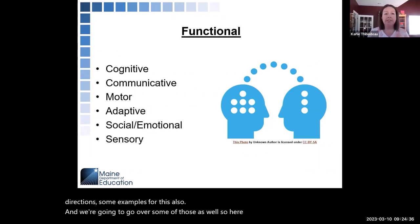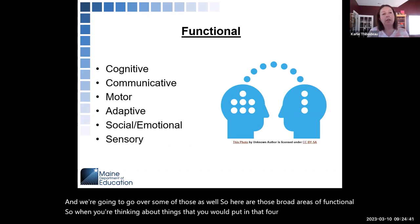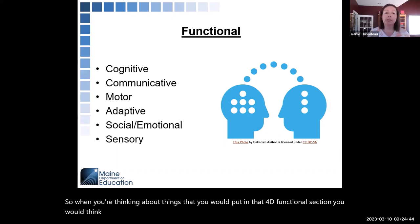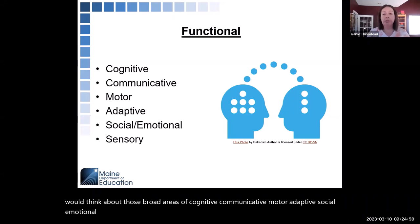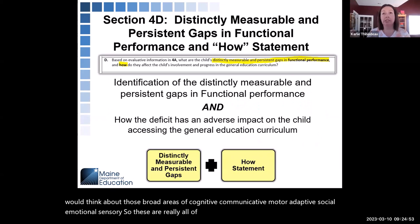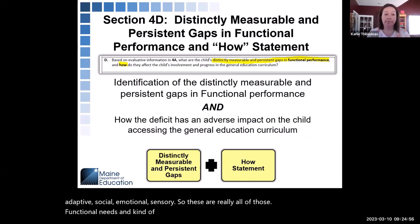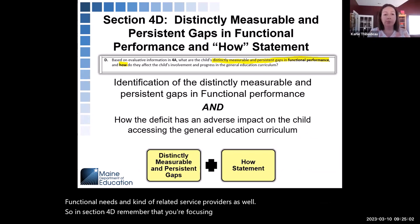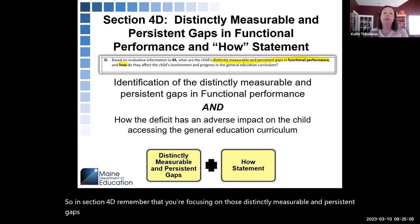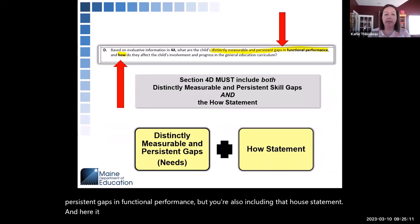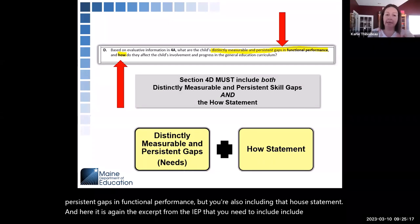When thinking about what to put in Section 4D, consider the broad areas of functional performance: cognitive, communicative, motor, adaptive, social, emotional, and sensory. These cover functional needs and relate to related service providers as well. In Section 4D, remember you're focusing on distinctly measurable and persistent gaps in functional performance, and also including that how statement. The IEP excerpt shows you need both the gaps and the how statement.